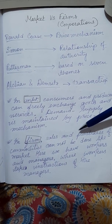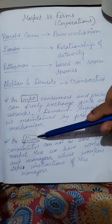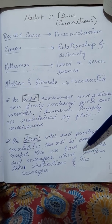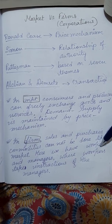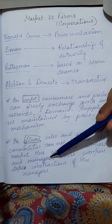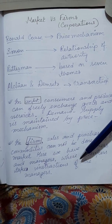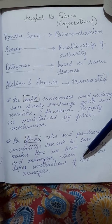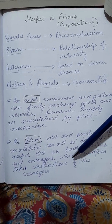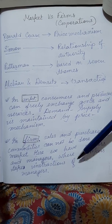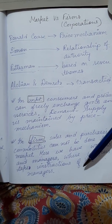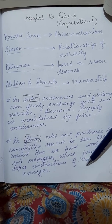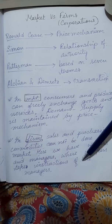In firms, sales and purchase of commodities cannot be done in the market, so there is no price mechanism in the firm. Also, in a firm we have employees — workers and managers. The workers are not free to take their own decisions; they have to listen to their managers and follow their instructions. So there is a hierarchy, and there is a higher authority to give workers instructions.